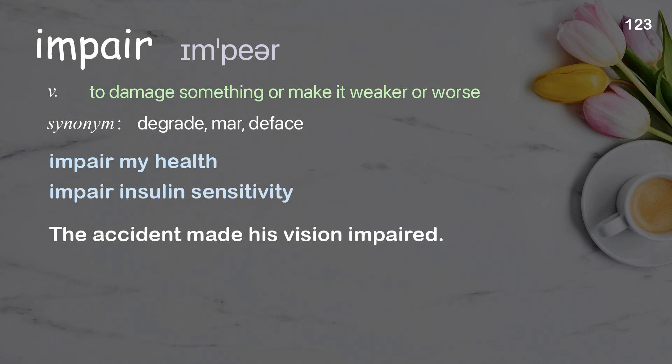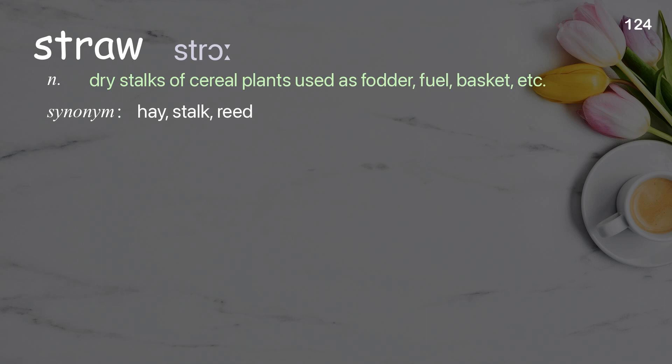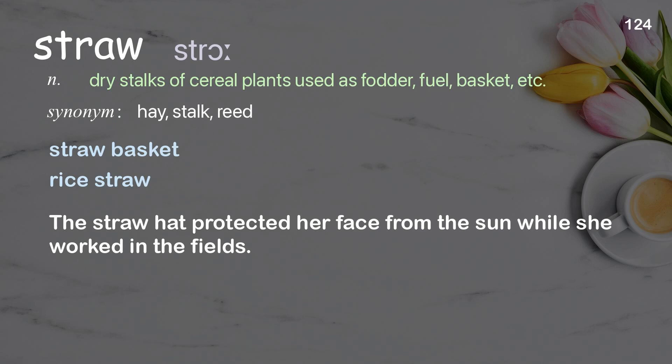Straw: dry stalks of cereal plants used as fodder, fuel, basket, etc. Examples: straw basket, rice straw. The straw hat protected her face from the sun while she worked in the fields.